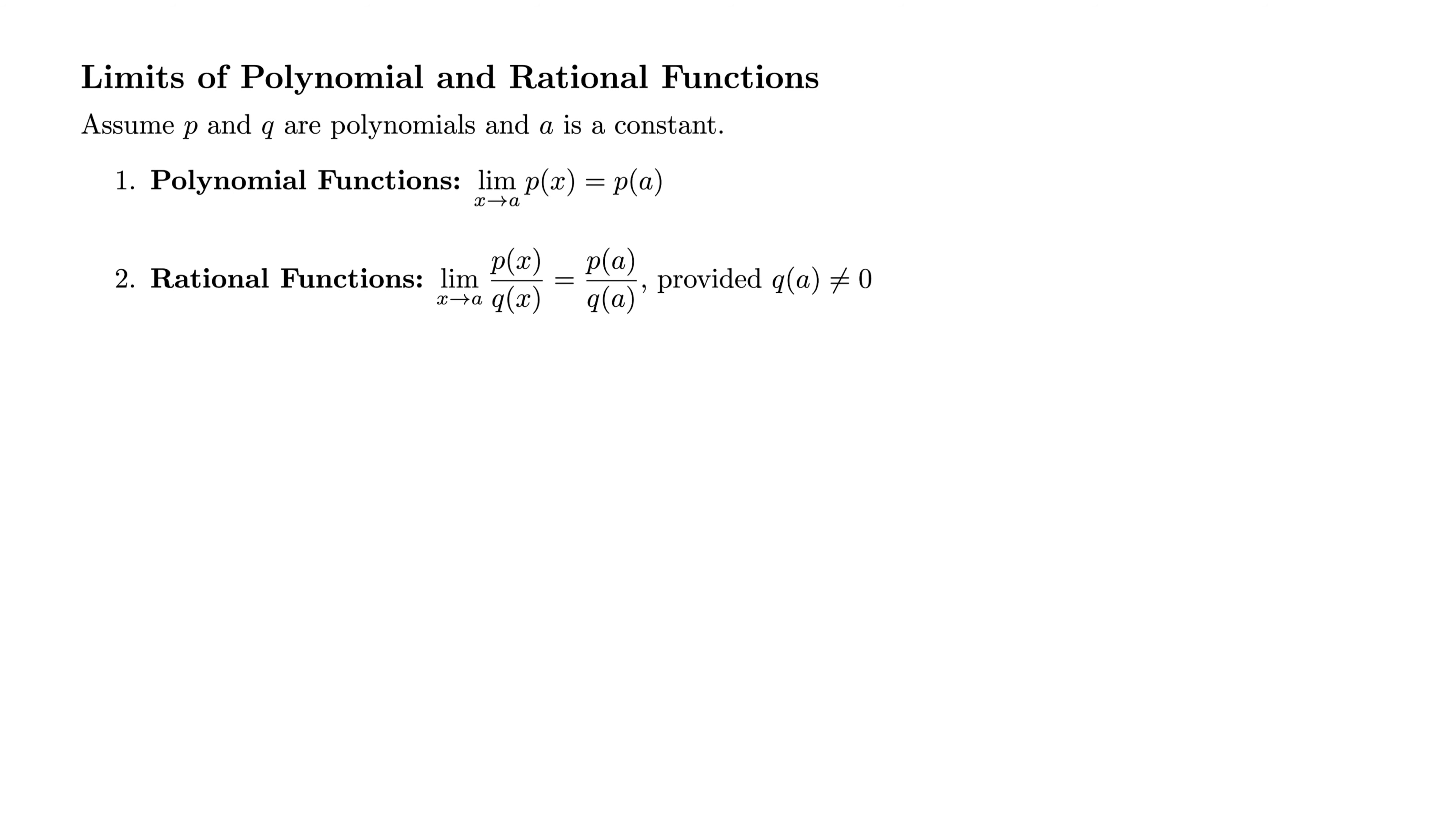Similarly, for rational functions, we have the limit as x goes to a of p(x) over q(x) is simply p(a) over q(a), meaning we just plugged in a and didn't look back. Provided, one caveat that q(a) does not equal zero. So thanks to those, anytime you have a polynomial or a rational function, you simply plug in a and don't look back when you're evaluating the limit.